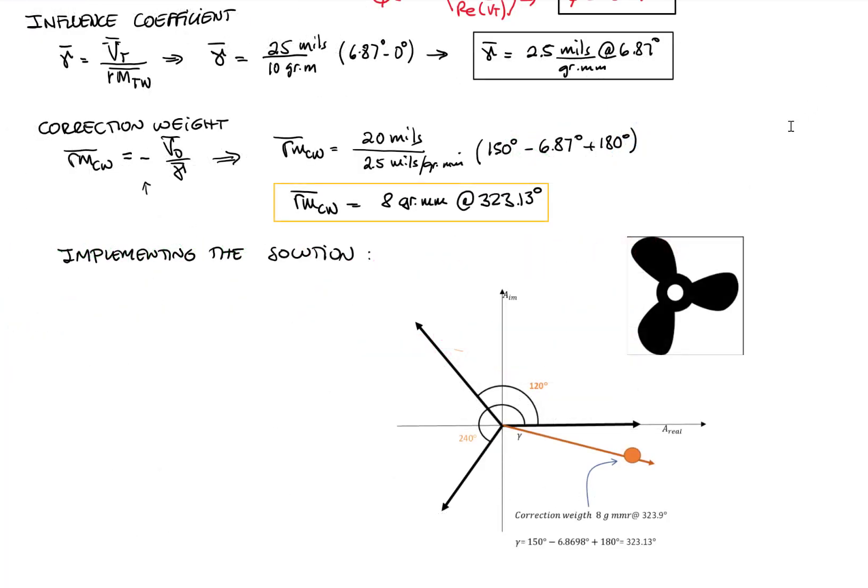We see that the solution cannot be implemented. There is no position available at 323.13 degrees to add a correction mass because we have a three-blade propeller. There are only places to install a correction weight at 0 degrees, 120 degrees, or 240 degrees.